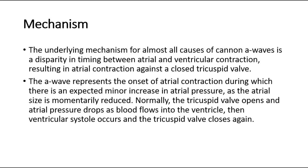The underlying mechanism for almost all causes of Canon A waves is a disparity in timing between atrial and ventricular contraction, resulting in atrial contraction against a closed tricuspid valve. The A wave represents the onset of atrial contraction, during which there is an expected minor increase in atrial pressure as the atrial size is momentarily reduced.